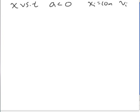Now let's consider another type of position versus time graph, this time with negative acceleration. Let's consider an initial starting position of 10 meters and an initial velocity of zero.